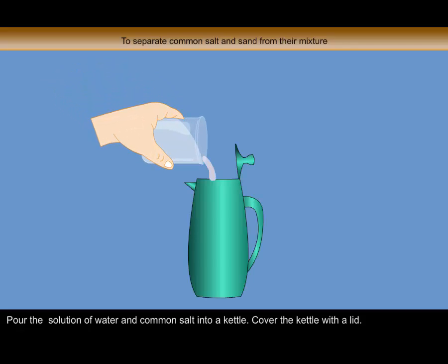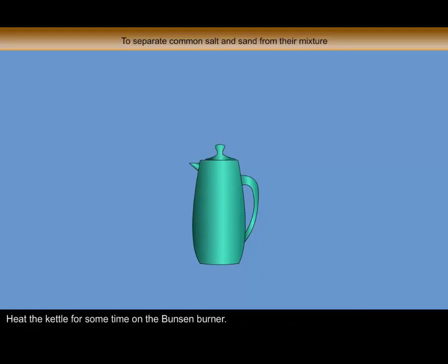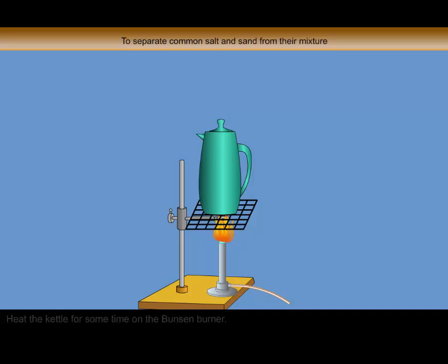Pour the solution of water and common salt into a kettle. Cover the kettle with a lid. Heat the kettle for some time on the Bunsen burner. You will observe steam coming out from the spout of the kettle.